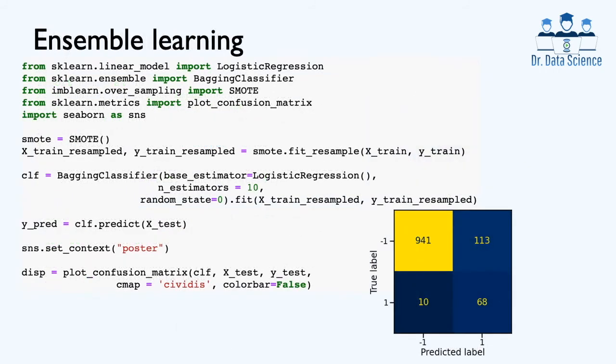One approach to tackle this problem is to use ensemble learning. To do that, we use scikit-learn ensemble and the bagging classifier to implement the bagging method we just talked about. We also use SMOTE, which is an oversampling technique. We get the training data and use SMOTE to oversample the minority class, resulting in X_train_resampled and y_train_resampled.